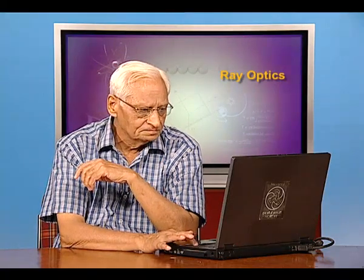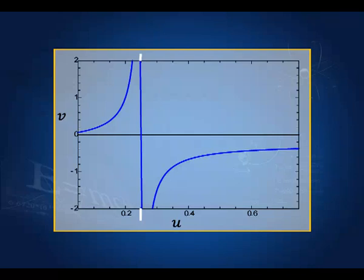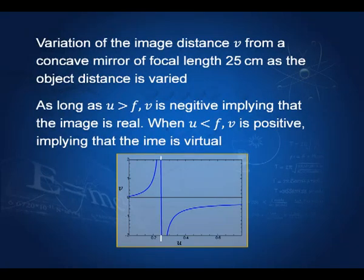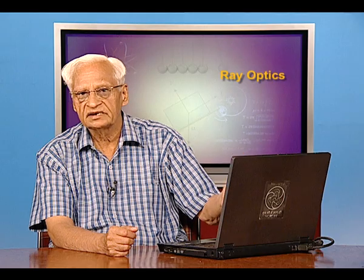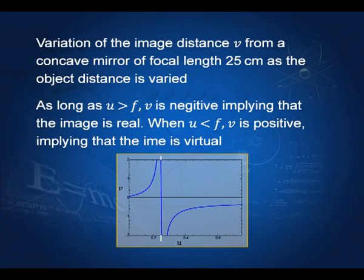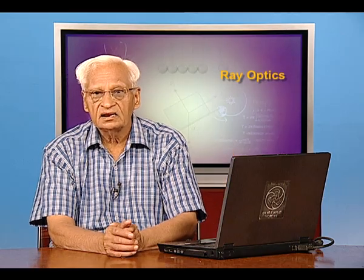Today we continue with the discussion. I will show you this slide which shows the relation between V and U for a concave mirror. As you know, U is the distance of the object from the mirror and V is the distance of the image from the mirror. This is for a concave mirror of focal length 25 centimeters. As long as U is such that the object is away from the focus, V is always negative, meaning the image is always real. When U is less than the focal length — that is, the object is nearer to the mirror than the focal length — then V becomes positive, showing that the image is virtual.